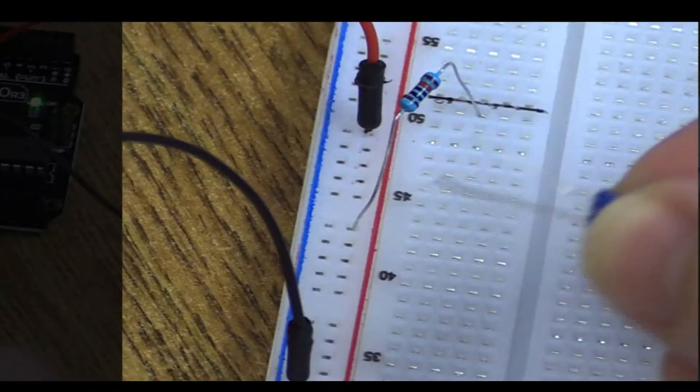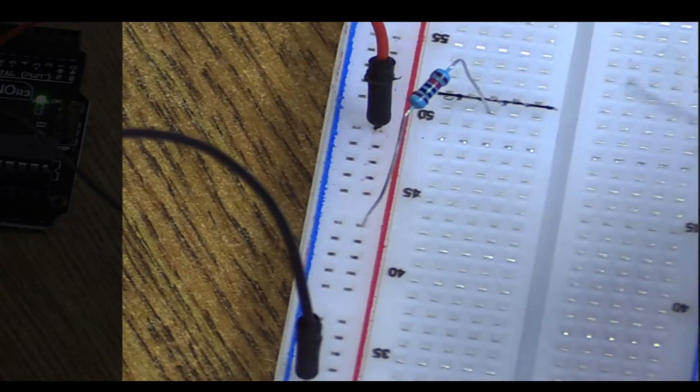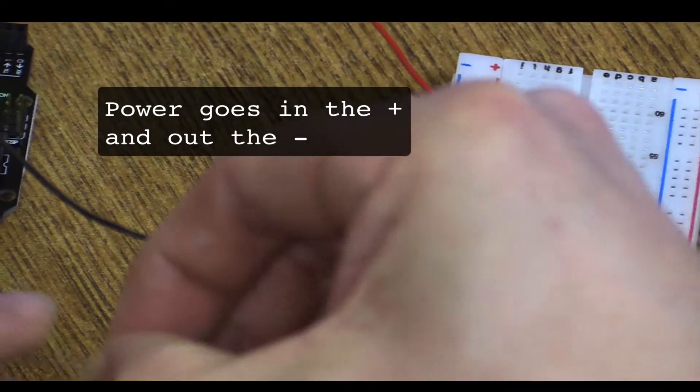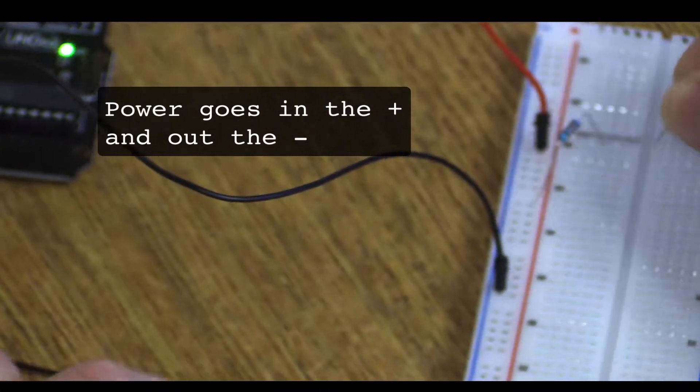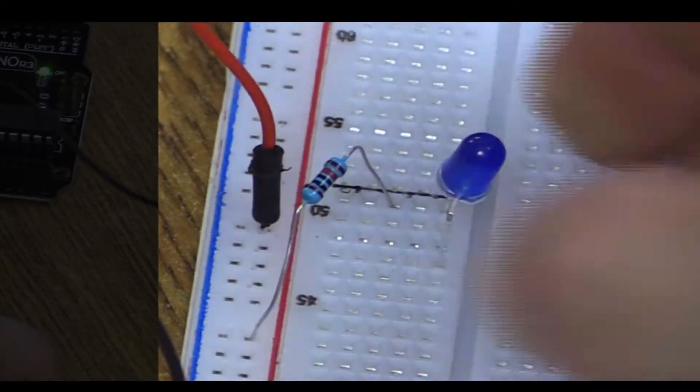When we look at our light, you'll see that one of these is a little longer than the other. The longer one is the plus. The smaller one is the minus. Put the plus in here. Put the minus in another row.